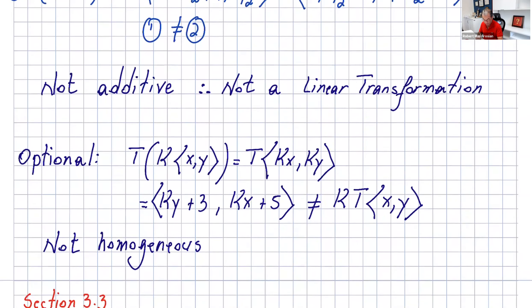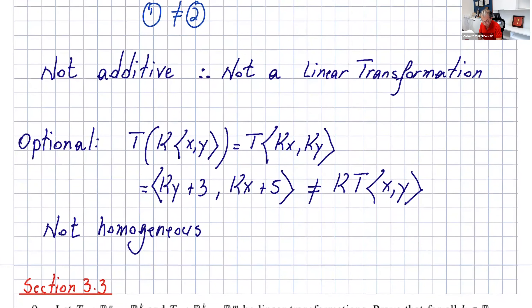So what you can say: is T(kx, ky) equal to kT(x, y)? Here, T(kx, ky) can be written as ⟨ky + 3, kx + 5⟩, and that's not equal to k times T(x, y) because if you multiply, you're not going to get the same result.